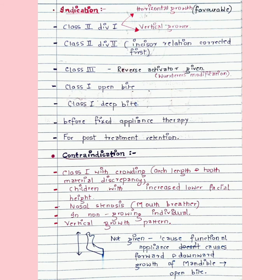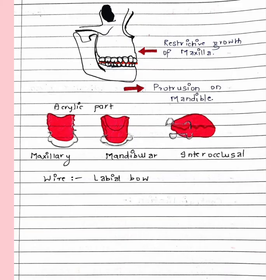Coming to contraindications: the activator is not given in patients with crowding or increased lower facial height, or in vertical growers, as it will lead to open bite. It is not given in patients with nasal stenosis or mouth breathers, since it is a very bulky device and the patient may not be able to breathe with it on. The appliance has an acrylic component — maxillary, mandibular, and interocclusal parts — and a wire component, the labial bow. Different modifications will have different designs.